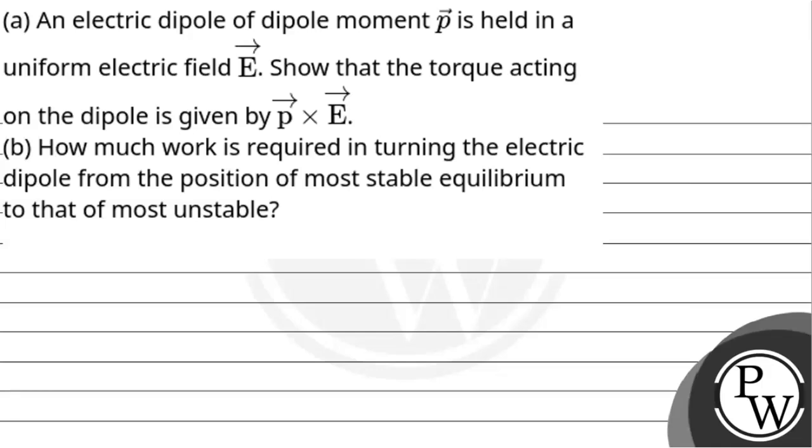Hello, let's get to the questions. Question says, an electric dipole of dipole moment p-vector is held in a uniform electric field E-vector. Show that the torque acting on the dipole is given by p-vector cross E-vector. How much work is required in turning the electric dipole from the position of most stable equilibrium to that of most unstable equilibrium?